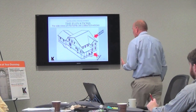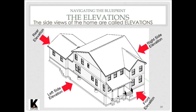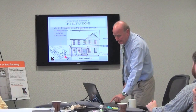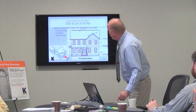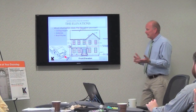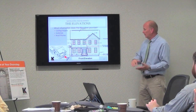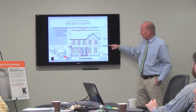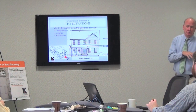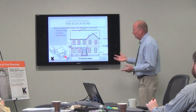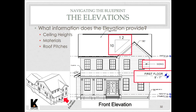The elevations show what something looks like straight on, always from right, left, rear, and front. The elevations are good to have because if you need to know ceiling heights or floor thicknesses, they'll always be on the elevation pages. The elevations also show us what the exterior materials are, the type of shutters, trim, the roof — anything that has to do with the exterior of the building.